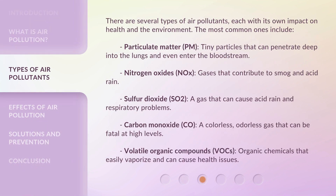There are several types of air pollutants, each with its own impact on health and the environment. The most common ones include: Particulate matter (PM), tiny particles that can penetrate deep into the lungs and even enter the bloodstream. Nitrogen oxides (NOx), gases that contribute to smog and acid rain. Sulfur dioxide (SO₂), a gas that can cause acid rain and respiratory problems. Carbon monoxide (CO), a colorless, odorless gas that can be fatal at high levels. Volatile organic compounds (VOCs), organic chemicals that easily vaporize and can cause health issues.